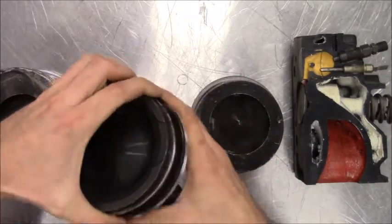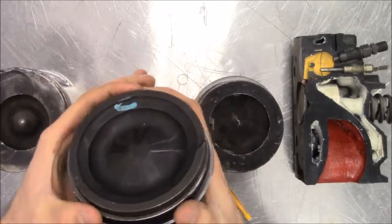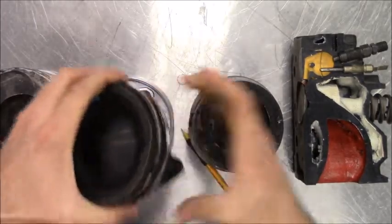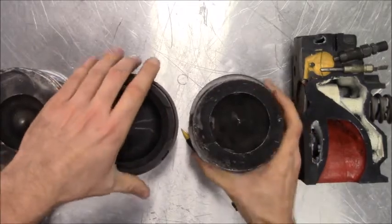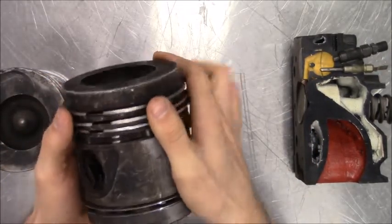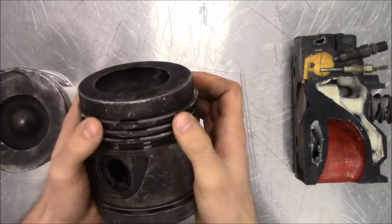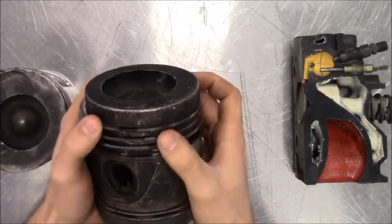Diesel engines typically have two compression rings similar to that of a gas, but they can have more, as in this piston, which has three compression rings and two oil rings. This is due to the high combustion pressures inside of a diesel engine as compared to a gas.